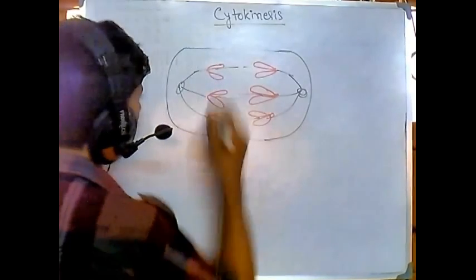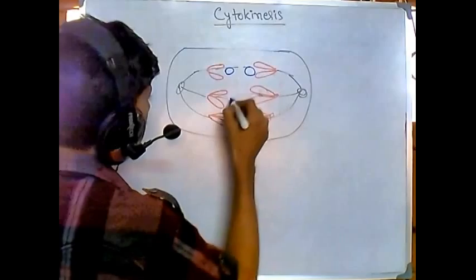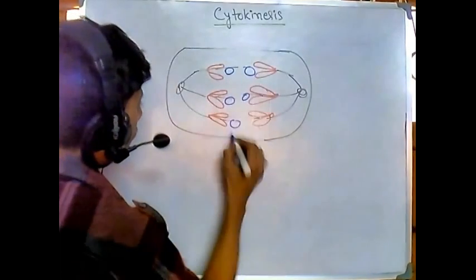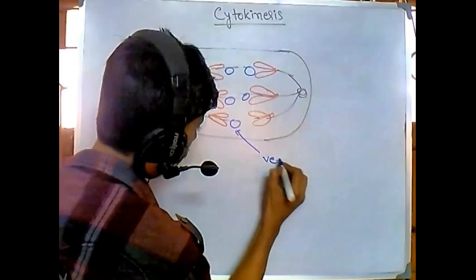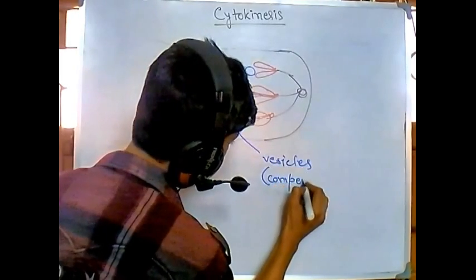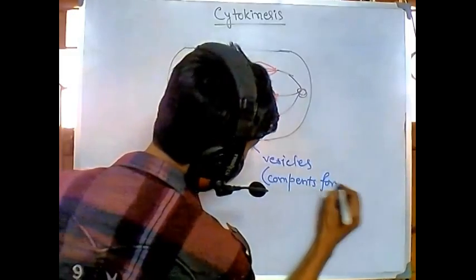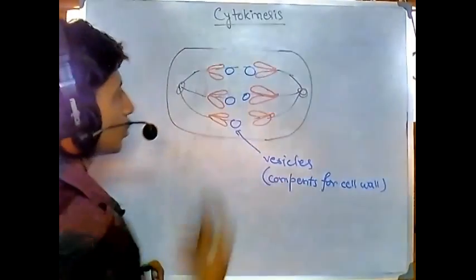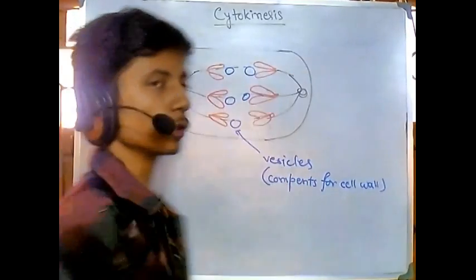Those vesicles are having components to form cell wall of plant cell. So these are the vesicles having components for cell wall synthesis. Those vesicles start to migrate using this microtubule.